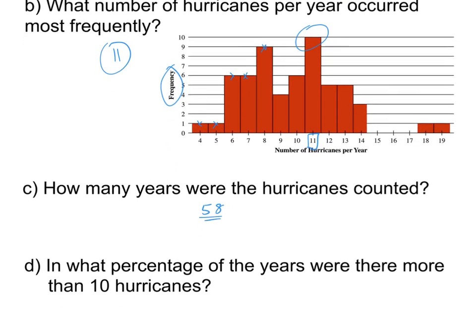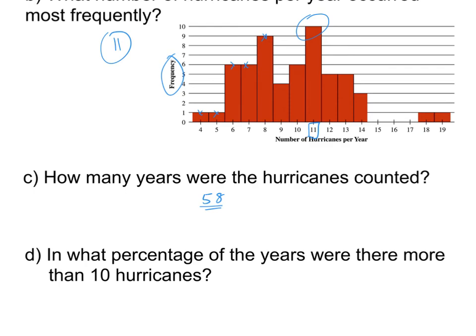Part C: how many years were the hurricanes counted? For that, I need to total all of the frequencies — that's one plus one plus six plus six plus nine, and so on, adding all the frequencies. You should get 58 if you count that up. Part D: in what percentage of the years were there more than ten hurricanes? I need to find eleven hurricanes, twelve, thirteen, fourteen, eighteen, and nineteen hurricanes — but I'm not adding those numbers; it asks what percentage of the years. Adding the frequencies gives you 25, and 25 out of 58 equals 0.43, which is forty-three percent.